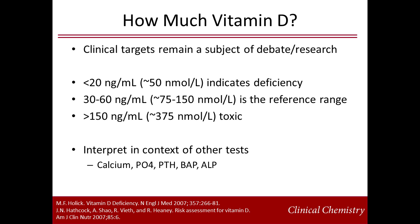Even if we can agree upon which method to measure vitamin D, clinical targets still remain the subject of debate. A serum vitamin D level of less than 20 ng/mL or 50 nmol/L indicates deficiency. Concentrations between 30 and 60 ng/mL are considered to indicate sufficiency based on data from immunoassays. The toxic concentration is considered above 150 ng/mL. Regardless of the vitamin D level, it should be interpreted in the context of other tests such as calcium, phosphate, and parathyroid hormone. Ongoing research is likely to further define and refine these intervals.